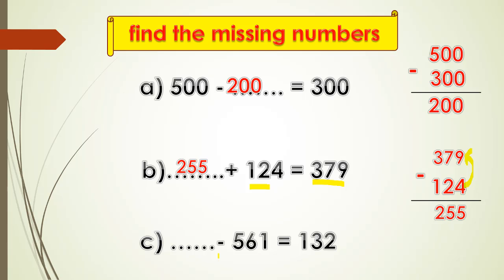Another exercise: blank minus five hundred sixty-one equals one hundred thirty-two. Any missing number I will make minus — except before and minus. Here the missing number is before and minus, so I will make plus. I will take this number and make plus.